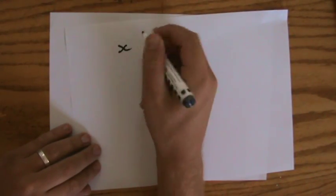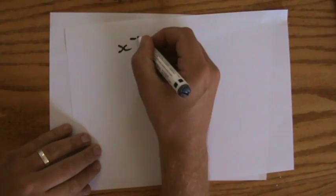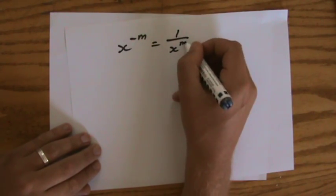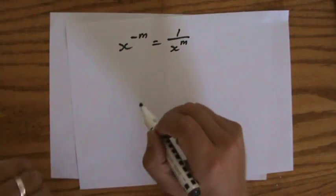Now, in general, if you like, x to the power minus m equals 1 over x to the power m. But that 1 is the coefficient of x.